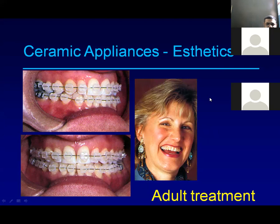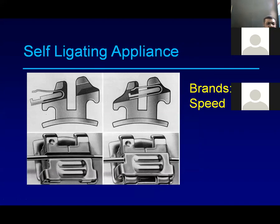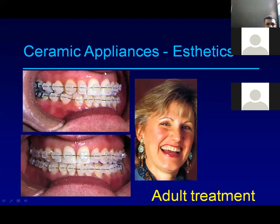Another bracket type is the self-ligating bracket. In conventional brackets, you use a ligature wire or elastomeric rings to hold the wire inside the bracket slot. With self-ligating brackets, there is a built-in clip mechanism on the bracket. This clip moves to hold the wire inside the slot without needing external ligatures.